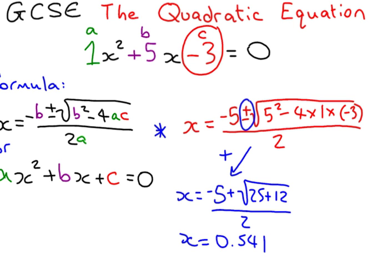Now, the minus answer, we're going to get minus 5, minus the square root of, and if you work out underneath the square root sign, 37, divided by 2, so x equals, if we put this on our calculator, minus 5.54.